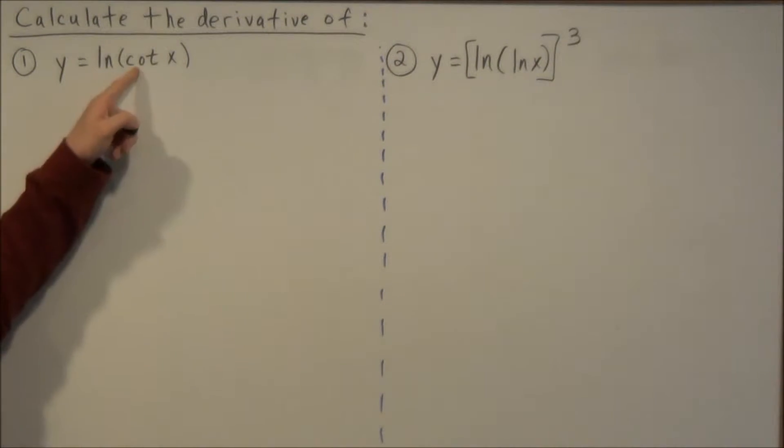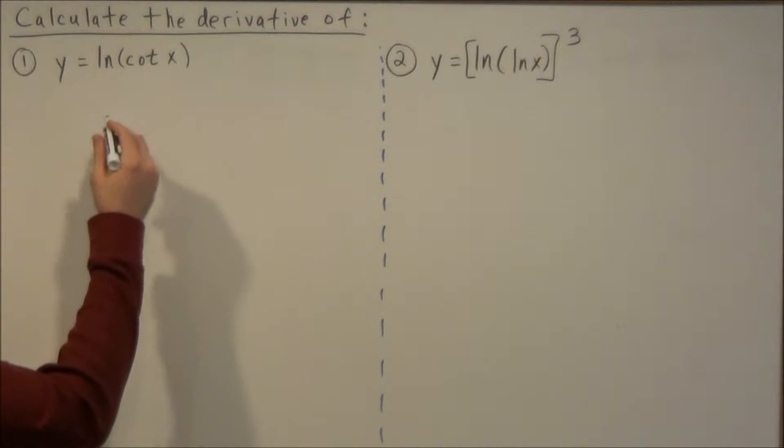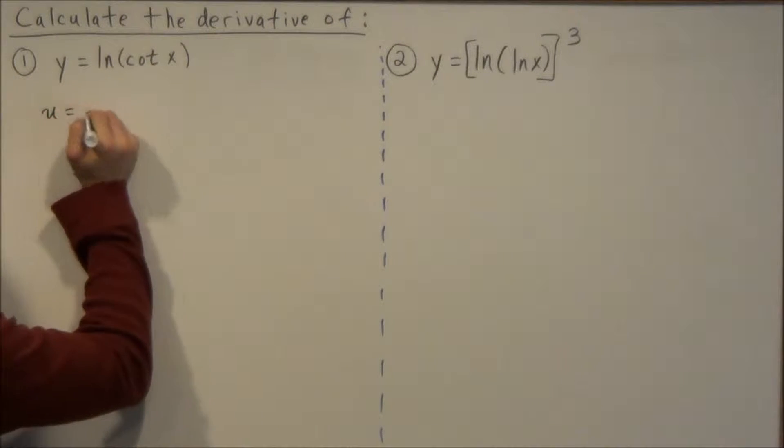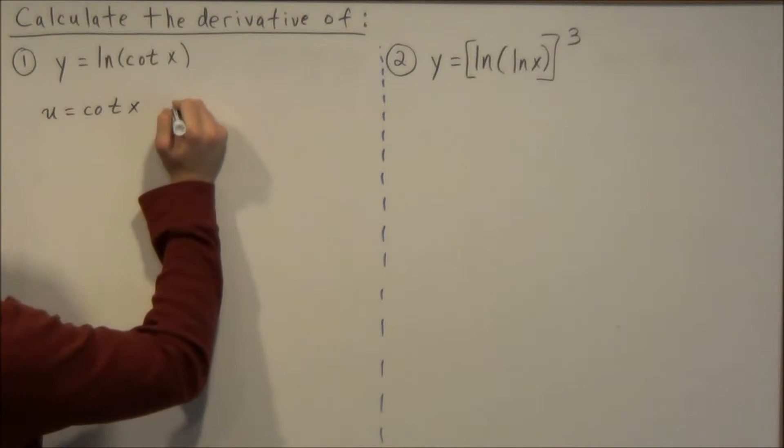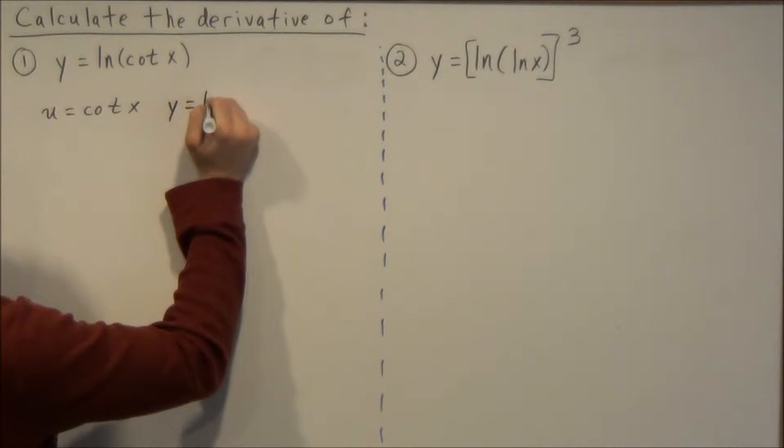For the first example we have natural log of cotangent x, so we're going to define u to be cotangent x, and that allows us to rewrite this as y equals natural log of u.